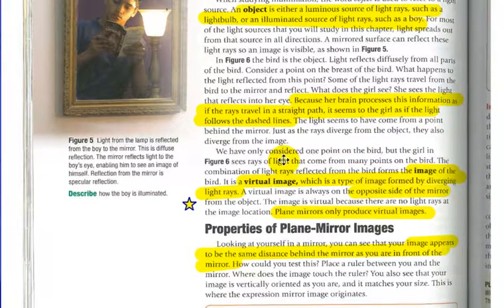The light seems to have come from a point behind the mirror, just as rays diverge from the object, they also diverge from the image. We've only considered one point of the bird, but the girl, in fact, sees rays coming from all points of the bird. The combination of light rays reflected from the bird forms.